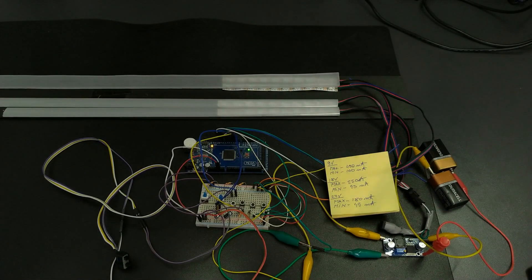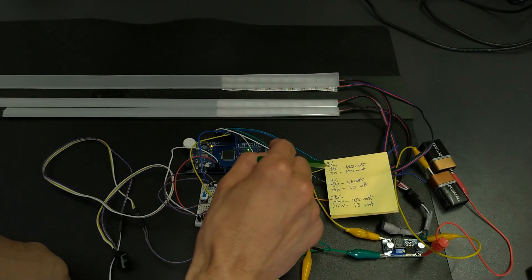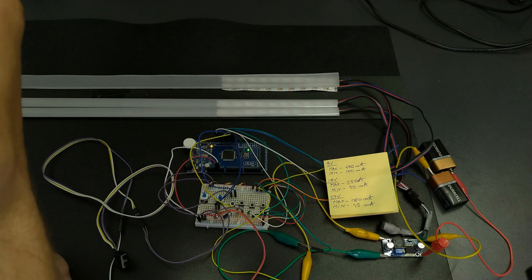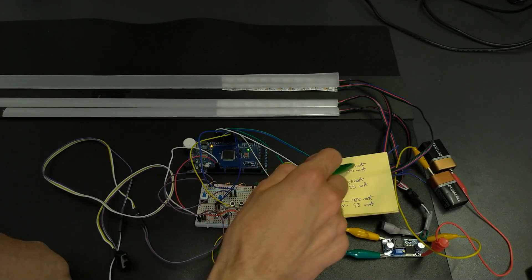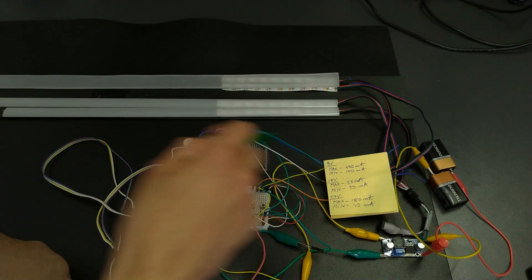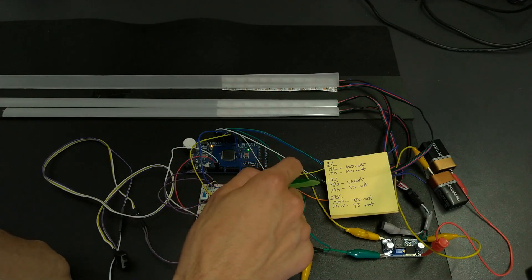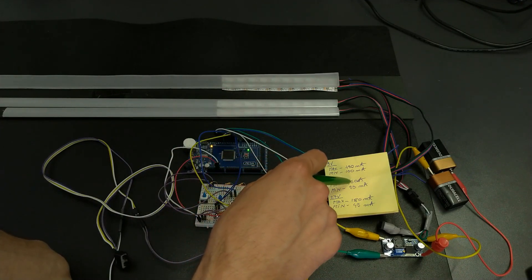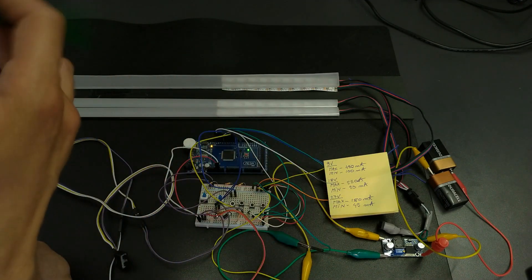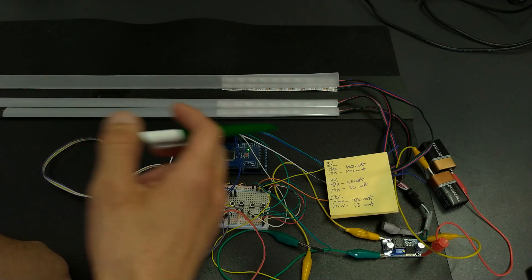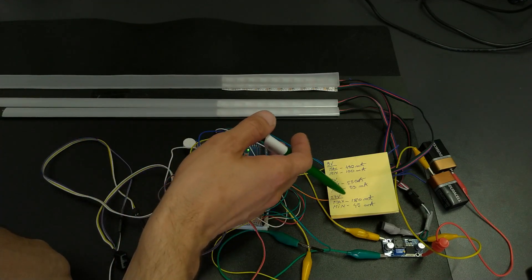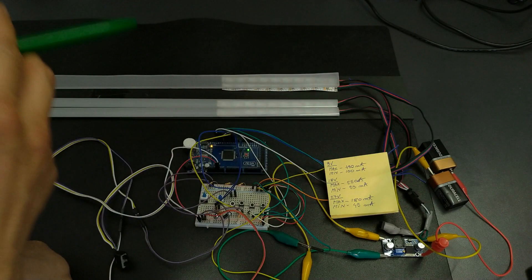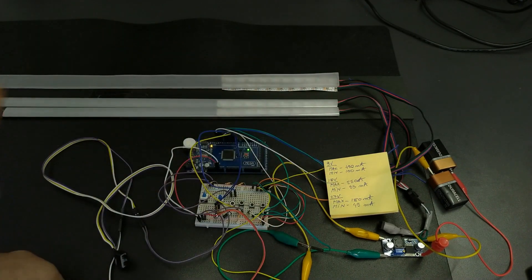So, here are the readings. At 9V we have a maximum of 490mA, a minimum of 100mA, at 18V we have a maximum of 250mA and a minimum of 53mA and at 27V we have a maximum of 180mA and a minimum of 45mA.